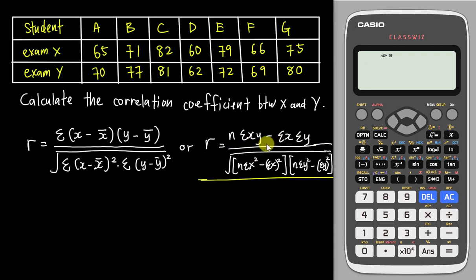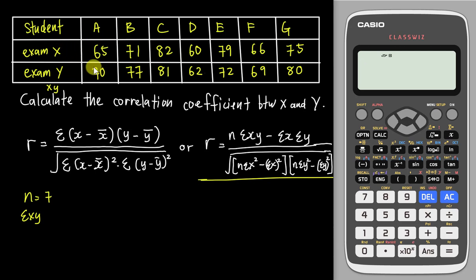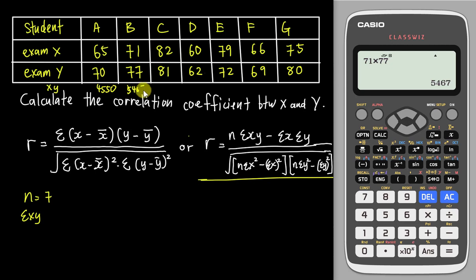Let me explain the variables in the formula. N is basically how many students you have — counting 1 through 7, so N equals 7. Sum of XY means you form a new column by multiplying each X value by its corresponding Y value — for example, 65 multiplied by 70 gives 4550, and 71 multiplied by 77 gives 5467, and so on. You then add all those XY products together to get the sum of XY.